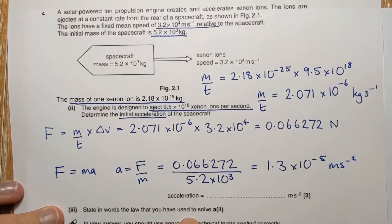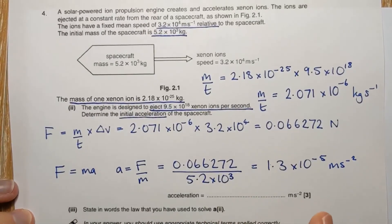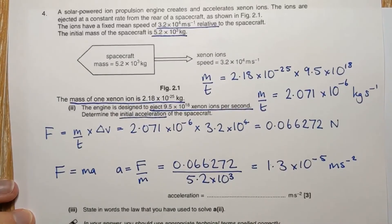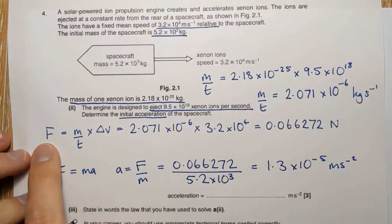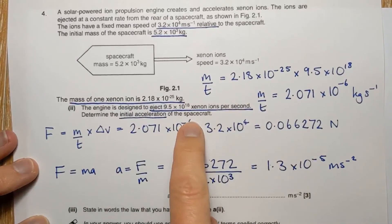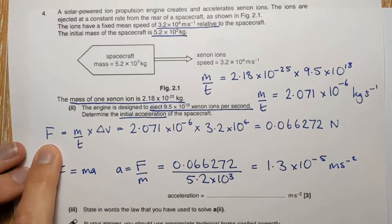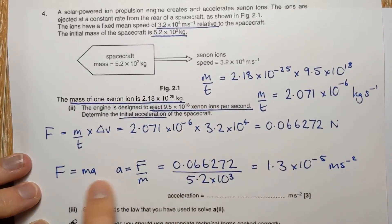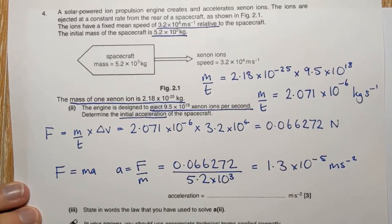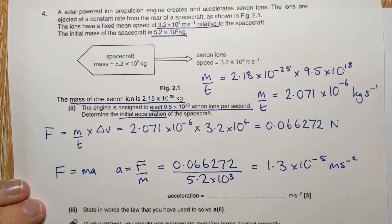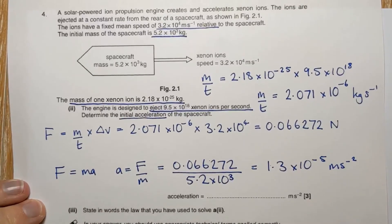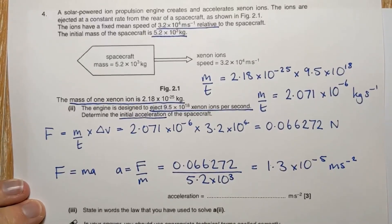Almost forgot the last part of the question there. State in words the law that you have used to solve the acceleration. There are two possible right answers here. You can either say you used Newton's second law, that the rate of change of momentum of the xenon ions is equal to the resultant force on them, or the same argument for the spacecraft. Or you can say Newton's third law, which we're covering in the next video. You can say Newton's third law. I'm not going to state it now because we're about to do it in the next video.